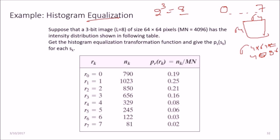So this has the intensity distribution like this. We can get the histogram equalization transformation and give the p_s(s_k) for each s_k. For r_0 equal to 0, we have 790 pixels with the value as 0 in the image, and we have 245 number of pixels with their intensity value as 5.